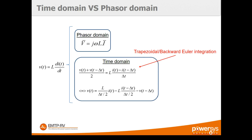In the time domain EMT-type software, we use trapezoidal integration to solve the differential equation. In EMTP specifically, we use both trapezoidal and backward Euler integration to ensure stability. With this equation we can isolate the voltage at a certain time as a function of current and historical terms, and solve the network using nodal analysis — or in EMTP's case, the modified augmented nodal analysis technique.